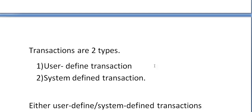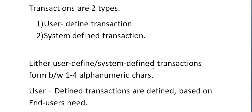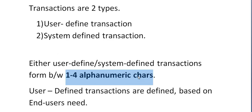Transactions are of two types: user-defined transactions and system-defined transactions. Both user-defined and system-defined transactions are formed between one to four alphanumeric characters — this is very important. Most use four-byte alphanumeric transaction IDs.